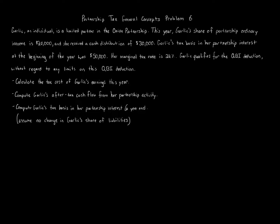Partnership tax general concepts, problem six. Garlic, an individual, is a limited partner in the Onion Partnership. This year, Garlic's share of partnership ordinary income is twenty thousand dollars, and she received a cash distribution of thirty thousand dollars. Garlic's tax basis in her partnership interest at the beginning of the year was fifty thousand dollars. Her marginal tax rate is twenty-two percent.